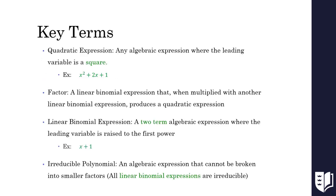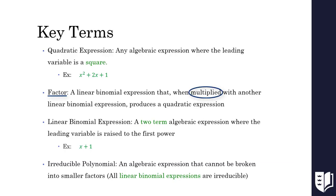First, we need to define a few key terms that will help us understand the process of factoring. A quadratic expression is any algebraic expression where the leading variable is a square. While it is possible to factor higher-order polynomials, we will only be factoring those in quadratic form. An example of a quadratic is x squared plus 2x plus 1. A factor is a linear binomial expression that, when multiplied with another linear binomial expression, produces a quadratic expression.